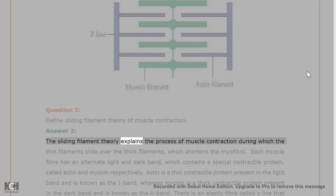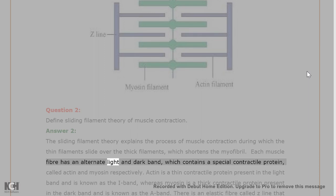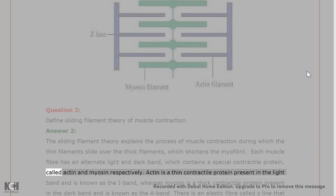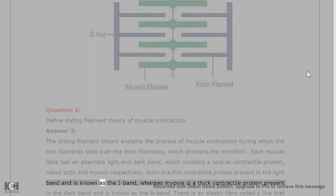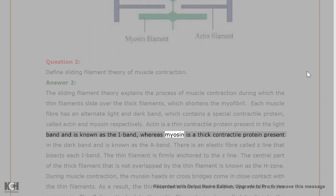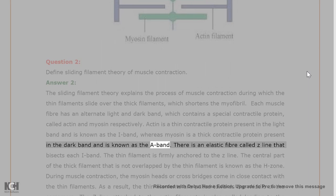The sliding filament theory explains the process of muscle contraction during which the thin filaments slide over the thick filaments, which shortens the myofibril. Each muscle fiber has an alternate light and dark band, which contains a special contractile protein, called actin and myosin respectively. Actin is a thin contractile protein present in the light band and is known as the I-band, whereas myosin is a thick contractile protein present in the dark band and is known as the A-band.